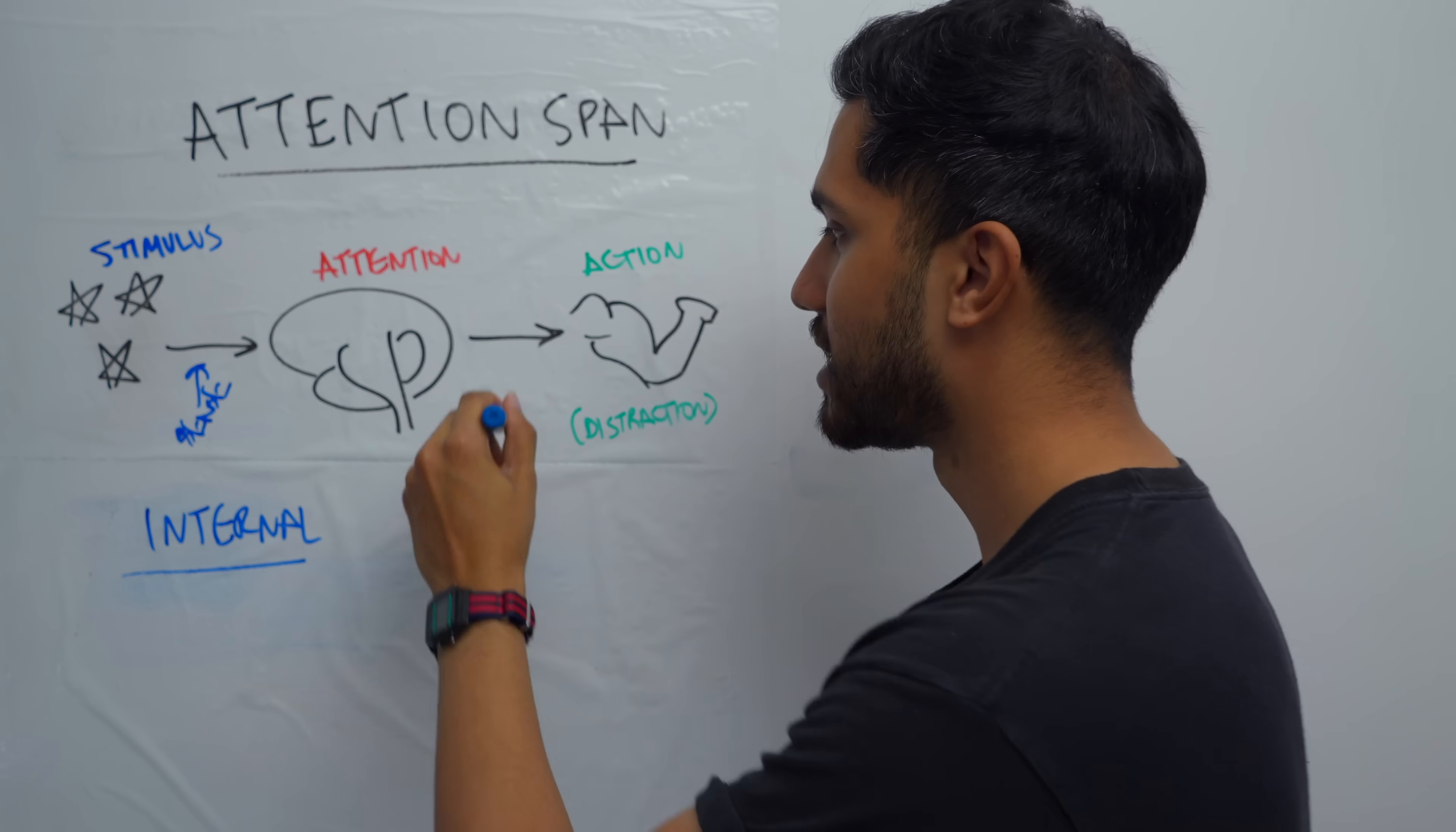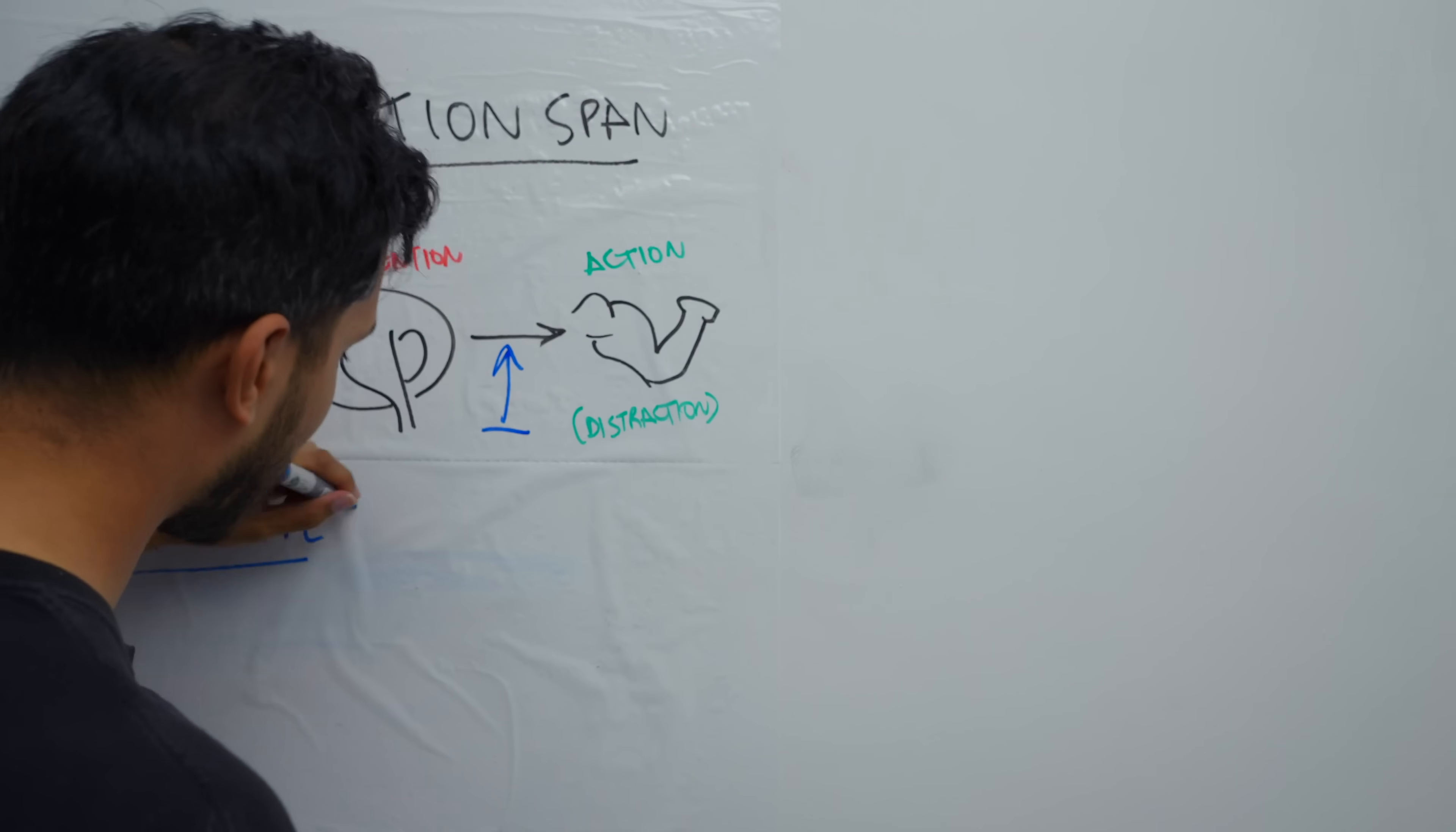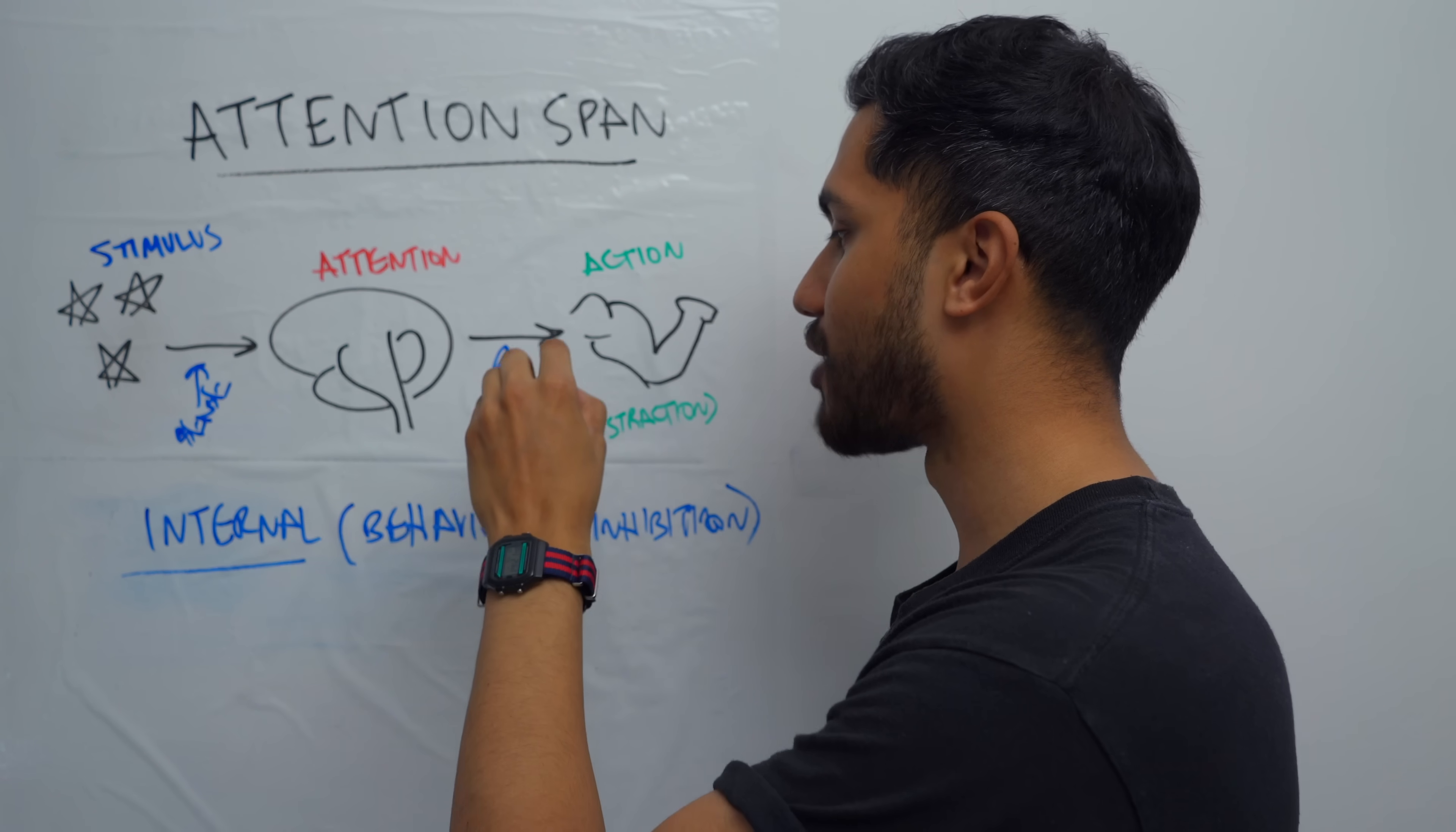So when you are dealing with internal cues, intrusive thoughts, it's about addressing this part here. When something gets your attention, which it will, it's about not acting and not playing out that distraction. And that is something called behavioral inhibition. Dealing with your own almost instincts to do something and inhibiting those is how you don't get distracted.